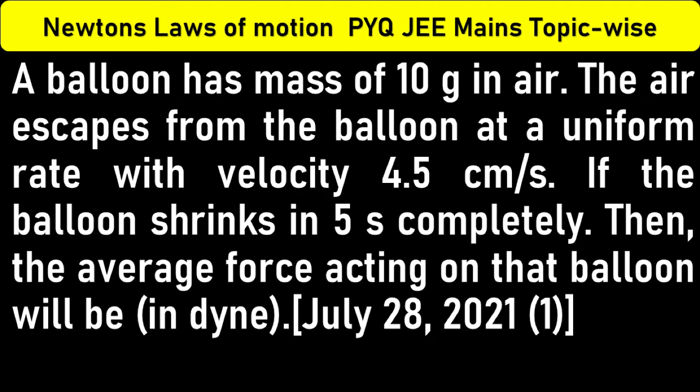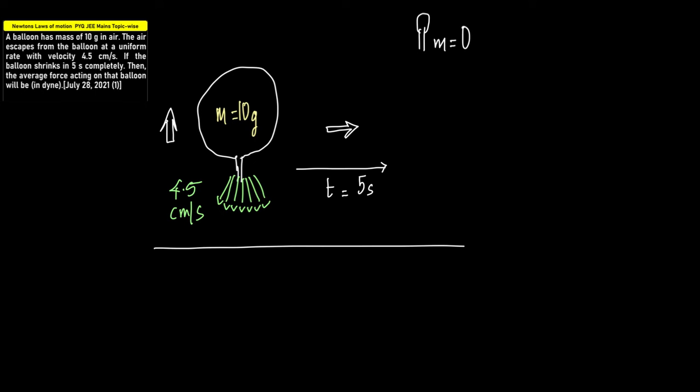If we were to visualize this question, here is a balloon of mass 10 grams. It's going up, and the velocity with which the air is escaping is 4.5 centimeters per second.